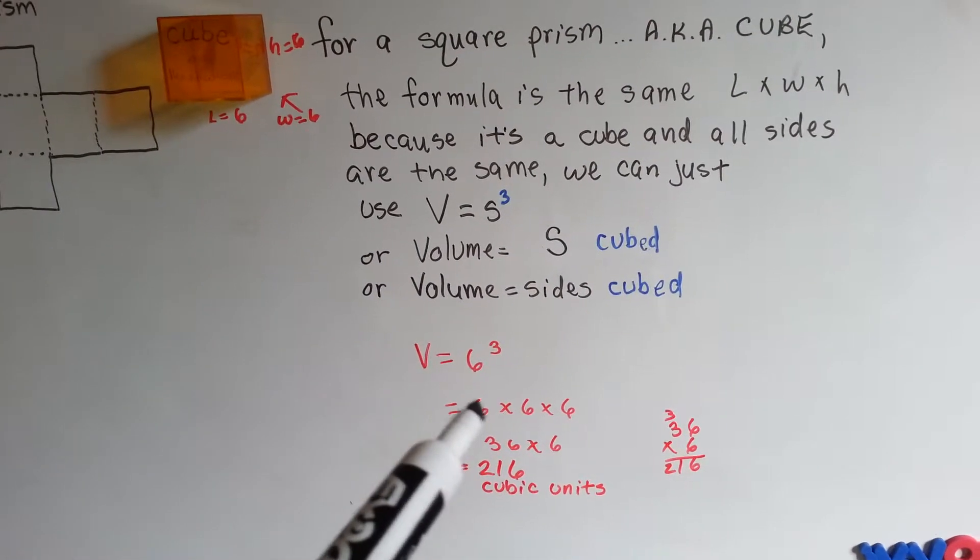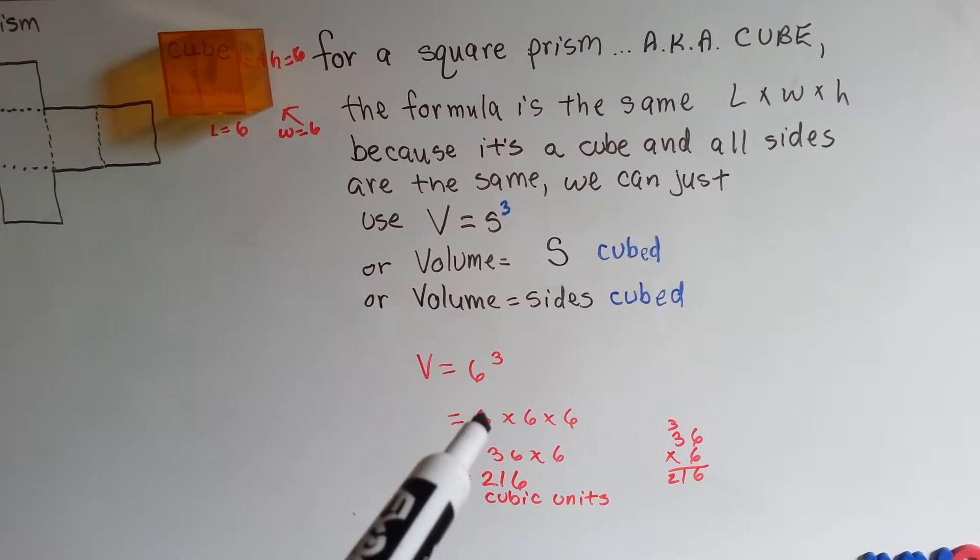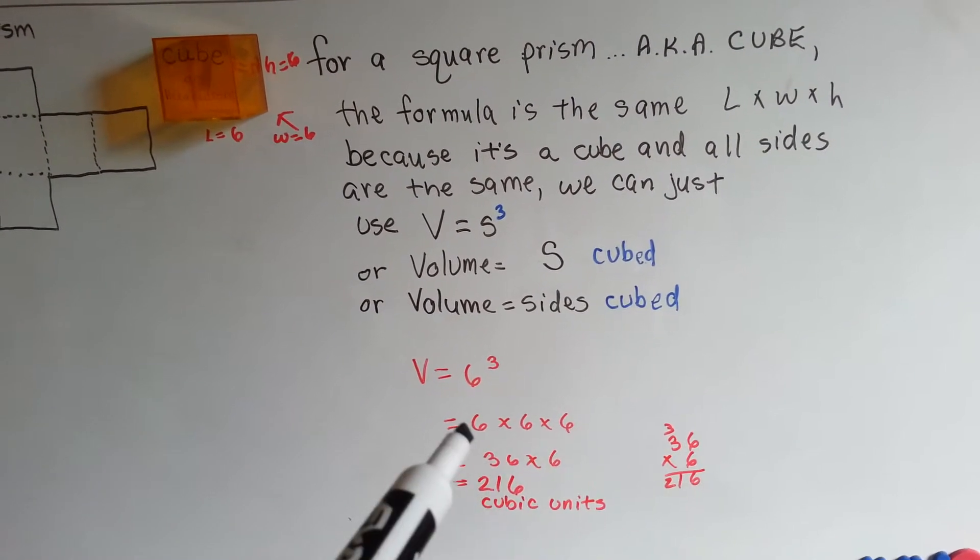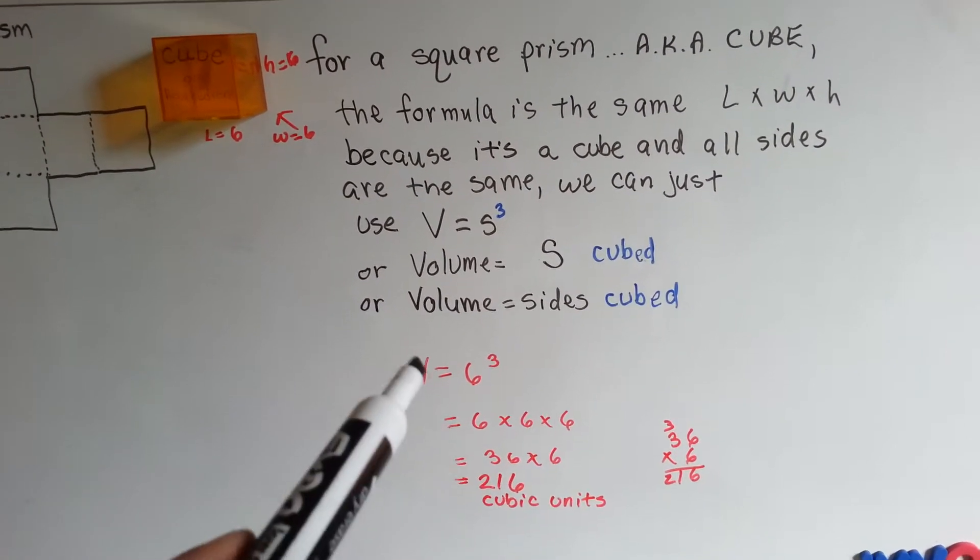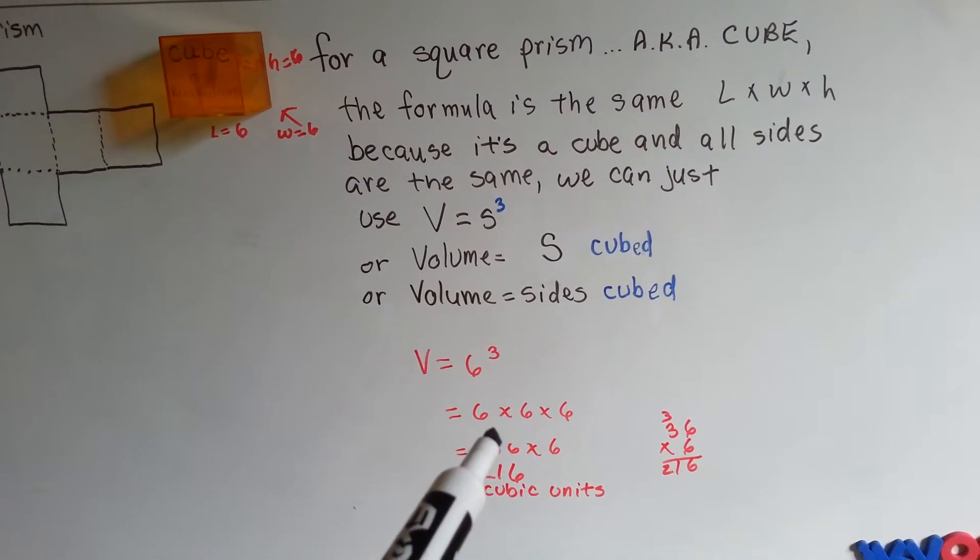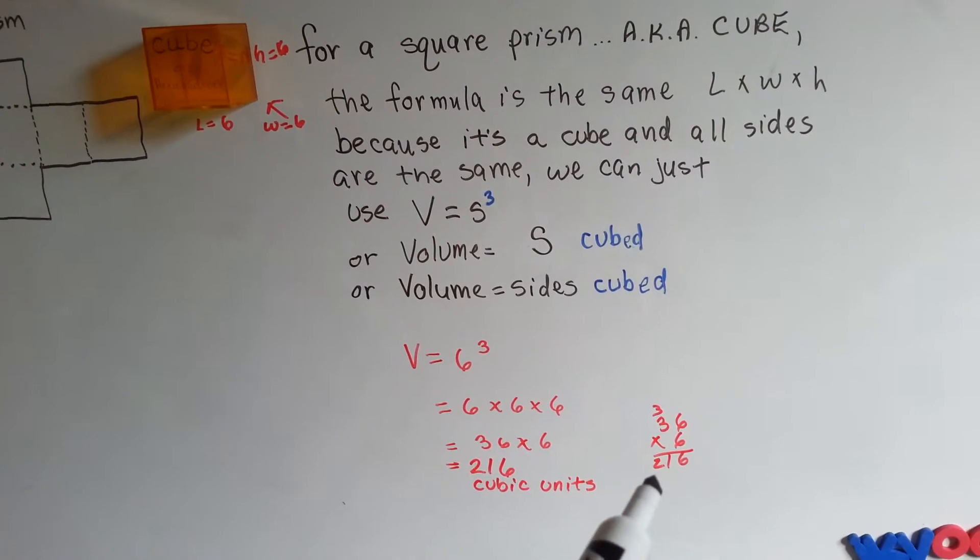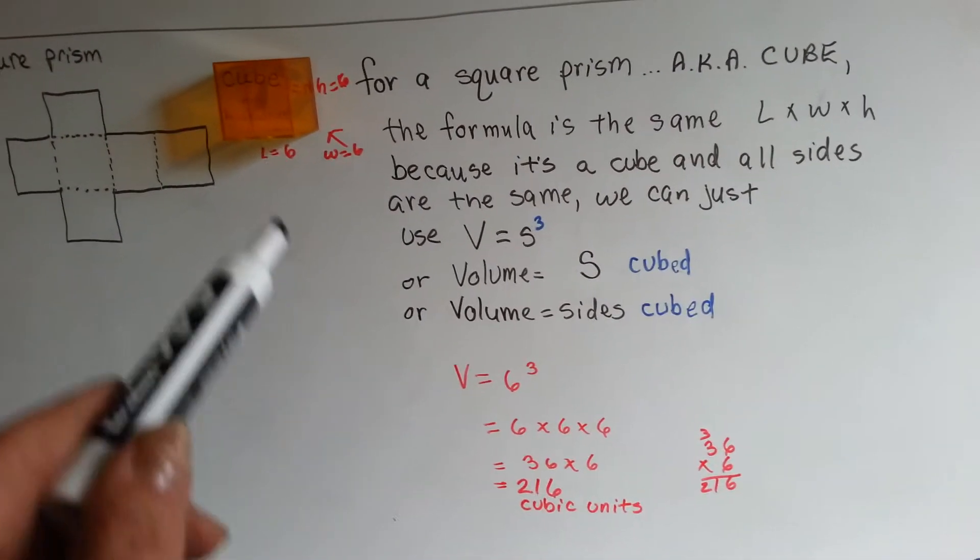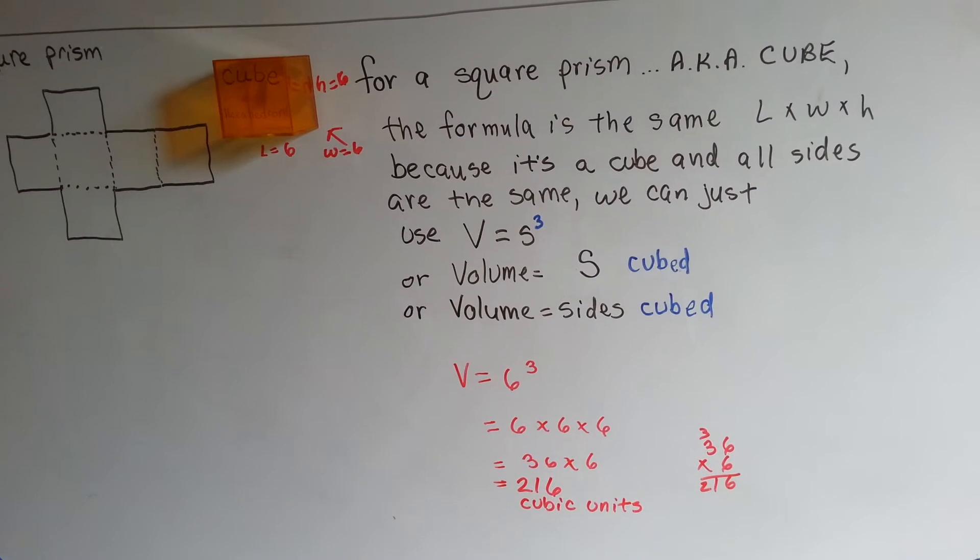It means that you're just going to put the length times the width times the height, the same number over and over again, 6 times 6 times 6. 6 times 6 is 36, and 36 times 6 is 216. The cubic units on this would be 216.